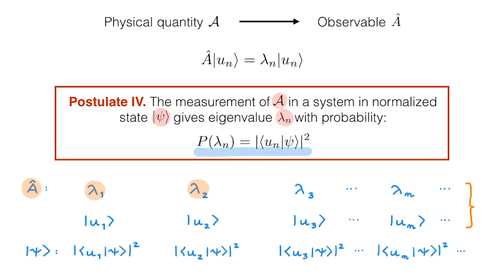So what we actually get when we measure A depends on two things. First, what we get depends on the intrinsic properties of A — its eigenvalues and eigenstates. And second, what we get depends on the specific state ψ in which our system is. So postulate 4 introduces the famous probabilistic nature of quantum mechanics.